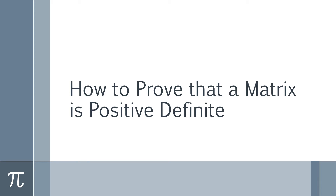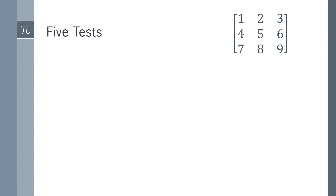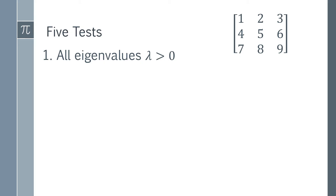In this video, I'm going to show you how you can prove that a matrix is positive definite. There are five tests, and any one of these tests is sufficient to prove that a matrix is positive definite. The first one is simply to find all of the eigenvalues, and if every eigenvalue is greater than zero, that tells you that you have a positive definite matrix.